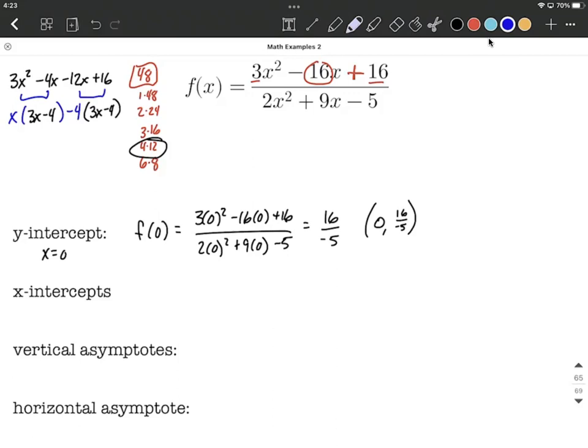To finish up our factoring, what's in front of the parentheses goes in one set, and what's inside the parentheses is a common factor, it goes in the other set of parentheses. So we have rewritten our numerator in factored form: x minus 4 times 3x minus 4.